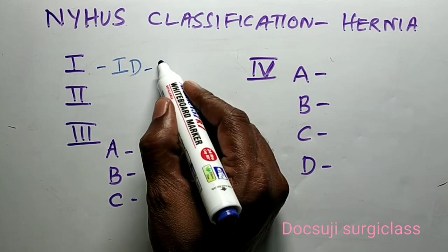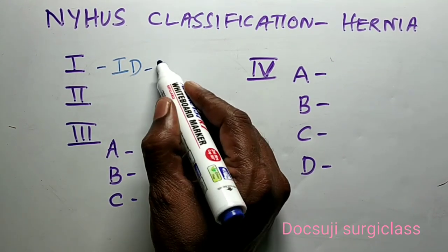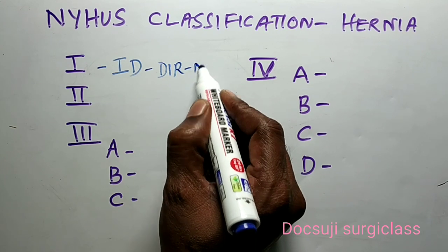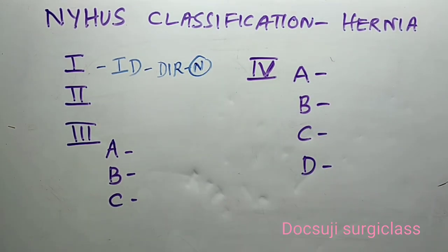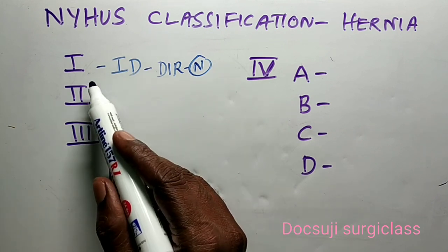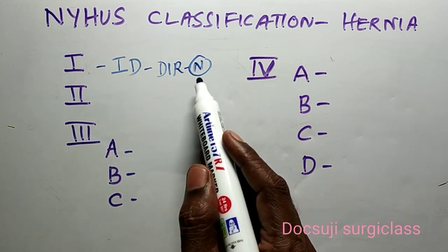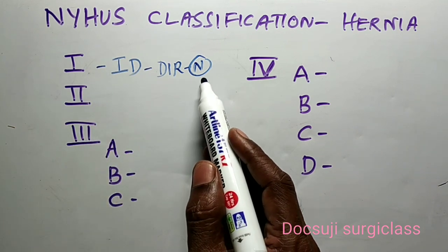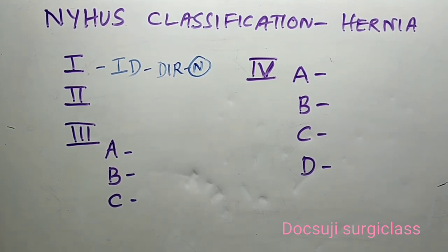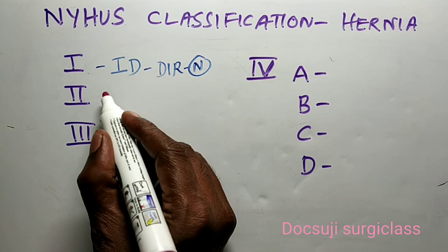Type 1 indirect inguinal hernia has a normal internal ring — that is, the deep inguinal ring is normal. It is typically seen in infants, the pediatric age group, as well as young adults.